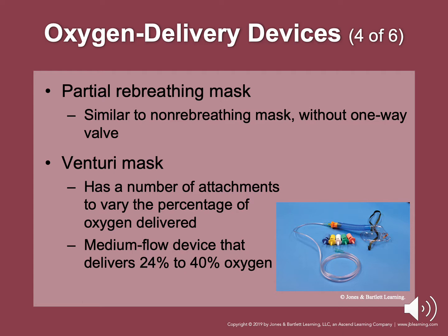A tracheostomy mask is for patients who do not breathe through the mouth and nose. It has a strap that goes around the neck. If you do not have a tracheostomy mask, you can improvise by placing a face mask over the stoma. Oxygen humidifiers are usually indicated for long-term oxygen therapy and do not dry out the nasal hairs — a water reservoir is needed.